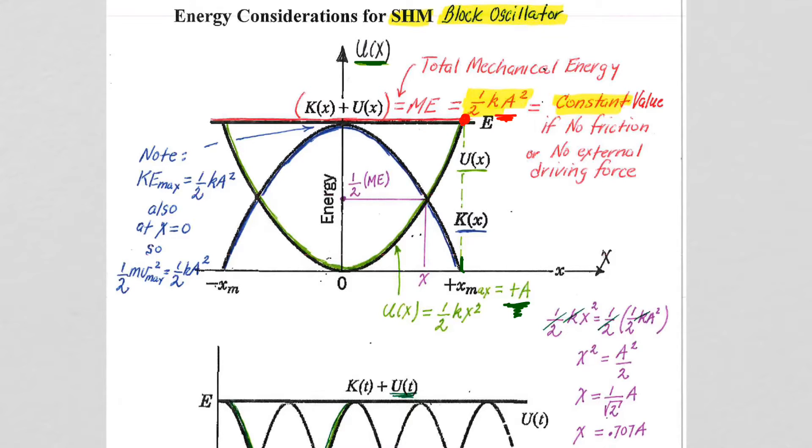So as the potential energy decreases, as the spring is returning back to its x equals zero mark, and remember that's our marble rolling along the potential energy function, the kinetic energy is increasing, so the kinetic energy value plus the potential energy value at any point in time will equal one-half ka squared.